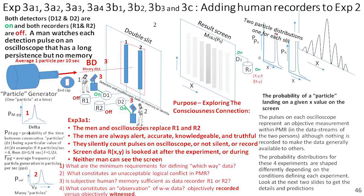I'm not going to go through all of these — that would take a lot of time. You can see some of the conditions. I have men with oscilloscopes. They replace R1 and R2, which are turned off. Instead, we have a line right out of Detector 1 and Detector 2 out to these oscilloscopes, which will put a little pulse on a screen. The men are always accurate, alert, knowledgeable, and truthful.